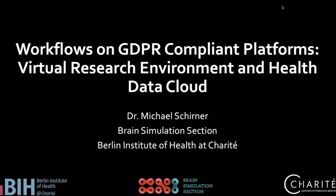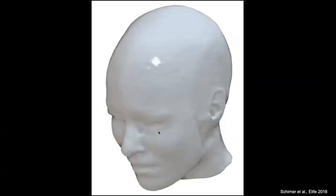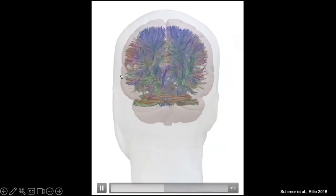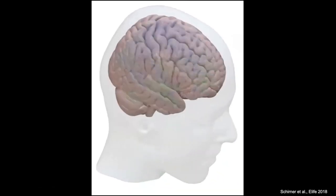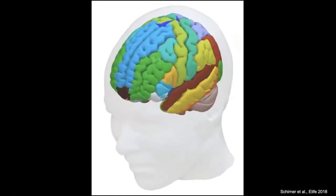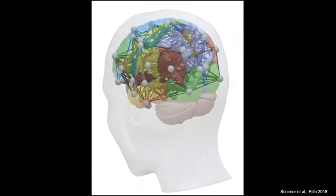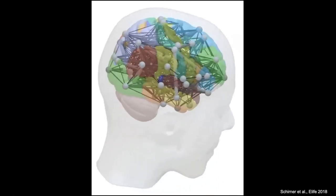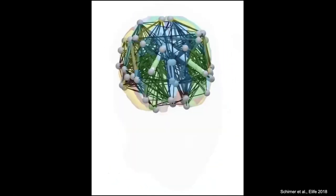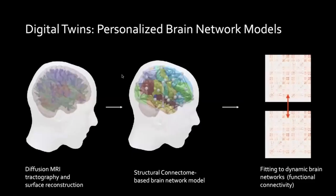Before we begin talking about digital platforms, the structural connectivity are primarily these white matter fiber bundles that connect different brain areas via long distances, but we also have connectivity between neighboring populations. We use this to arrive at an abstract and aggregated description of the brain network.